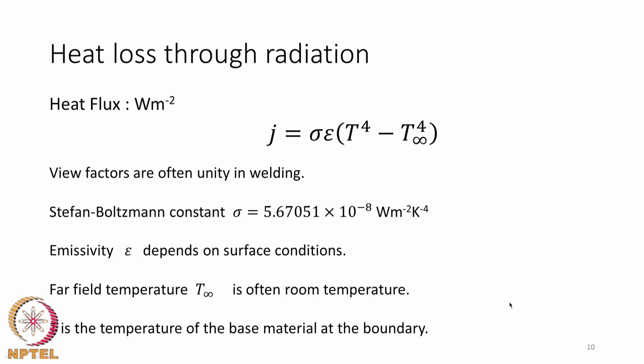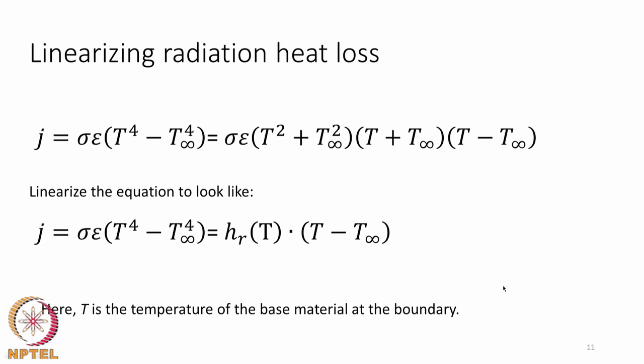Sometimes the fourth-power law may not be amenable for implementation in software. In such situations people linearize the radiation heat loss — it is not strictly correct but is possible when temperature changes are not too fast. The linearized form treats radiative heat transfer analogously to convective heat loss, except the coefficient in front of (T − T∞) becomes a strong function of the surface temperature.